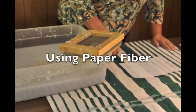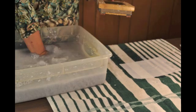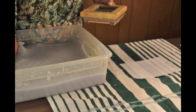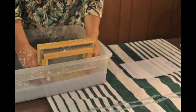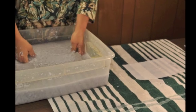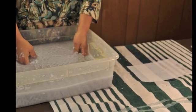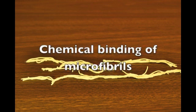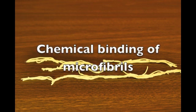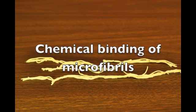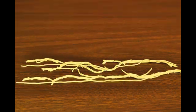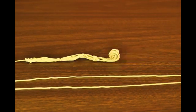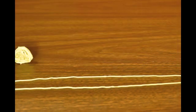However, it's important to understand how they're bound to each other, because then we can understand what happens in the paper maker's vat of fiber. The reason that cellulose microfibrils are bound to each other is because they have hydrogen and oxygen bonds between the individual chains of cellulose microfibrils.